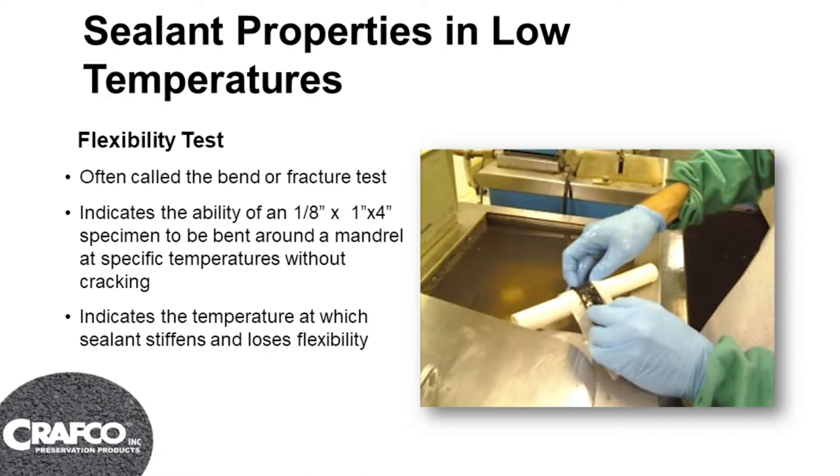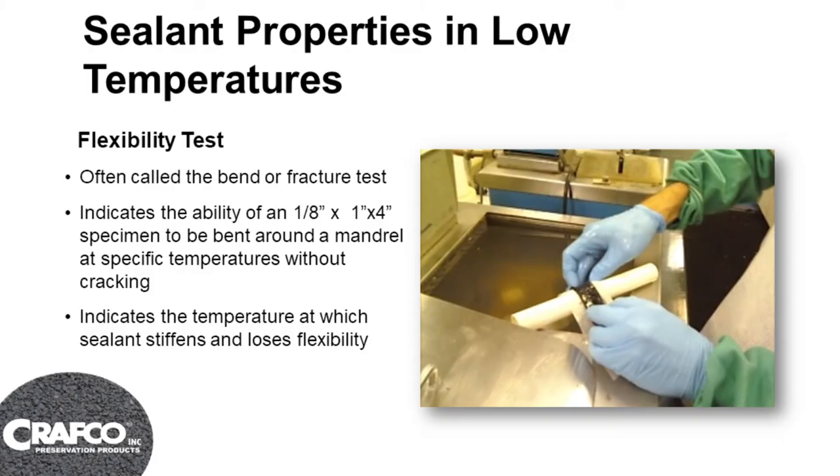If we don't do a bond test on sealants but still want to know what the flexibility is going to be like, we do a flexibility test. The flexibility test uses a 1/8-inch thick sample, 1 inch wide by 4 inches long — that black strip you can see being laid between their hands. They lay that over a 1-inch mandrel or pin, bring it down to whatever temperature they want to test it at, and then bend that specimen around that mandrel 90 degrees typically in 10 seconds. That tells you how flexible the material is. We measure sealants sometimes down to 23 degrees.